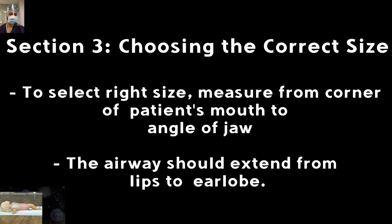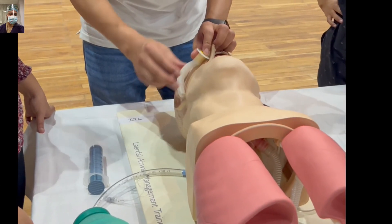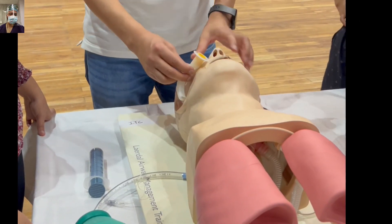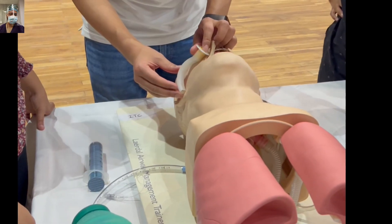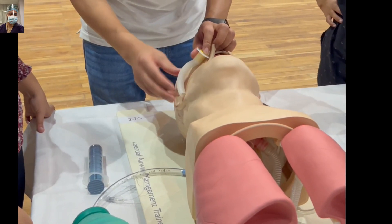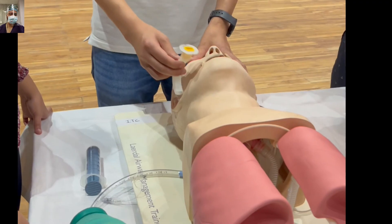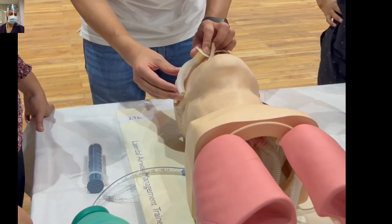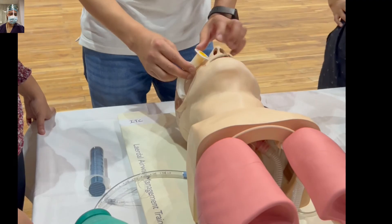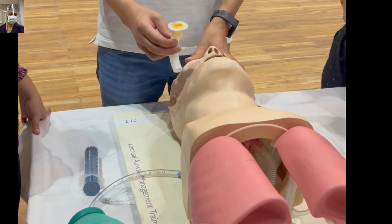The next step is to choose the correct size of the Guedel's Airway. The method is simple: you measure the distance by placing the Guedel's Airway at the angle of the mouth — the angle of the jaw — and the tip should reach the ear lobule, as being demonstrated. So the correct size is when it extends from the angle of the mouth to the tip of the ear lobule.